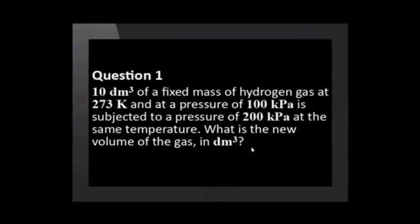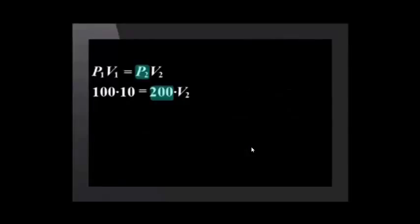And the temperature is also kept constant. To start with the gas's volume was 10 decimeters cubed and its pressure 100 kilopascals. So we have P1 and V1. Then the gas's pressure was doubled from 100 to 200 kilopascals.